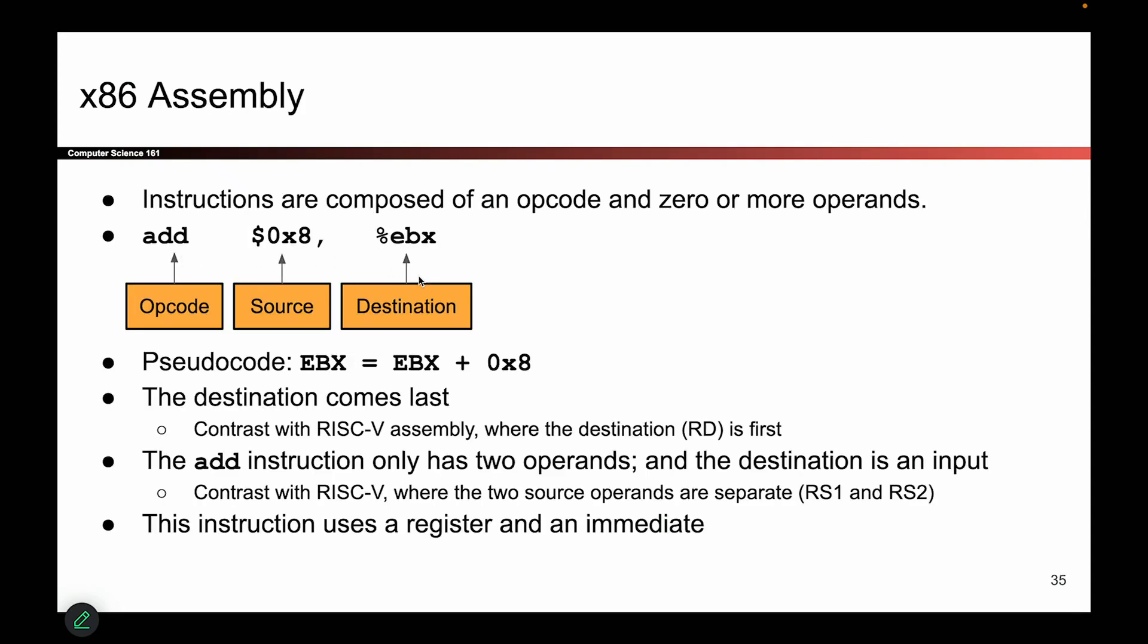When I write instructions, they look like this. First, I write down what the instruction is. Do I want to add? Subtract? Multiply? Something else. And then I write the source, where I'm trying to add from, and the destination is where I want to add to. Don't really care about the very specific syntax, but what this is saying is I want to add 8 to the value in EBX. So I'll pull out the value in EBX, add 8 to it, and then store the result back into the EBX register.